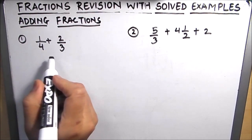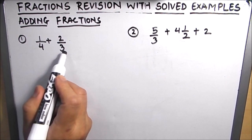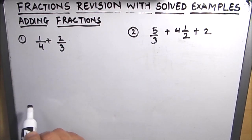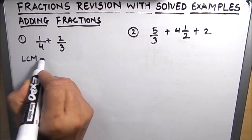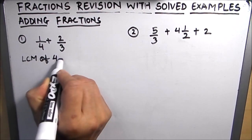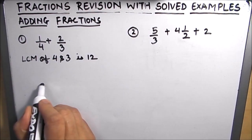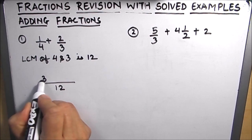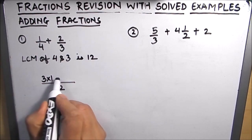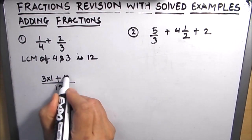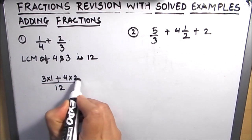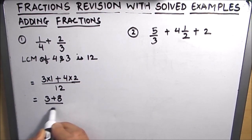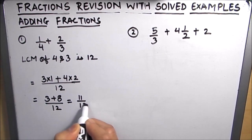For adding two fractions, we need to find the LCM of the two denominators, make the two fractions equivalent fractions, and then add them directly. The LCM of 4 and 3 is 12, so the common denominator is 12. We write 3 times the numerator 1 for the first fraction, and 4 times the numerator 2 for the second fraction. This gives us 3 plus 8 over 12, which equals 11 over 12. This is our final answer.